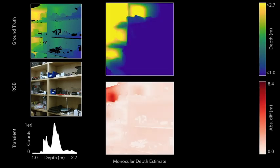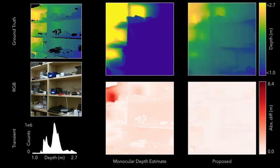In this scene, the monocular depth estimator predicts good ordinal depth, but with severely distorted scale. Our method matches the predicted depth to the SPAD transient, producing a much cleaner result.